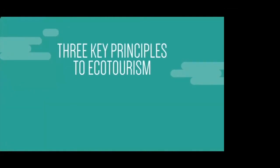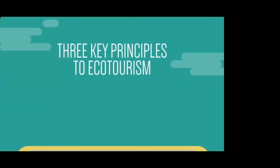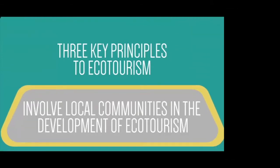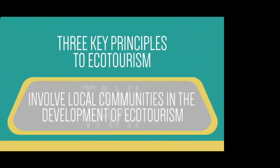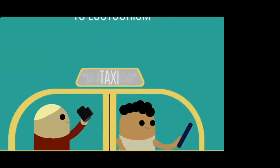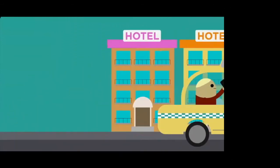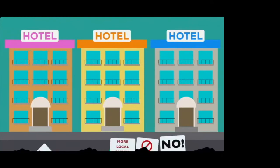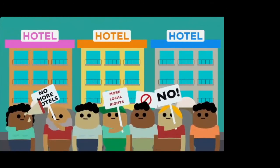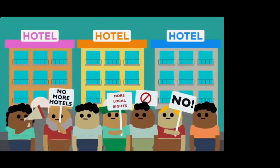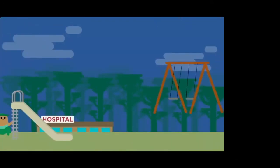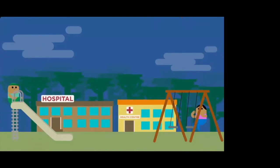There are three key principles to ecotourism. The first key principle is to involve local communities in the development of ecotourism. It is important that communities maintain control over the level and kind of tourism they want in their land. Money from tourism projects should be invested in the communities who are hosting tourists, rather than just to operators based outside the area.